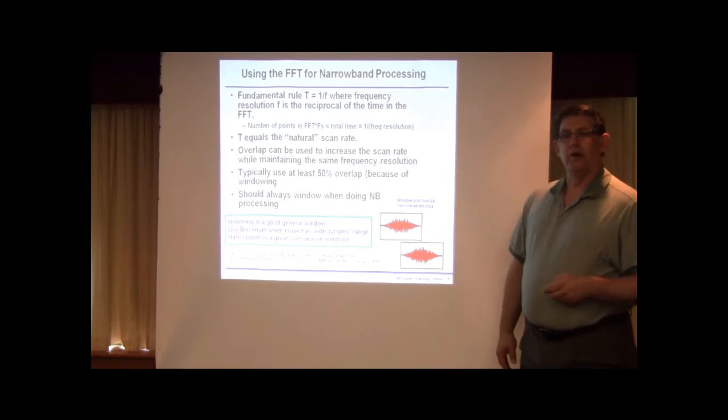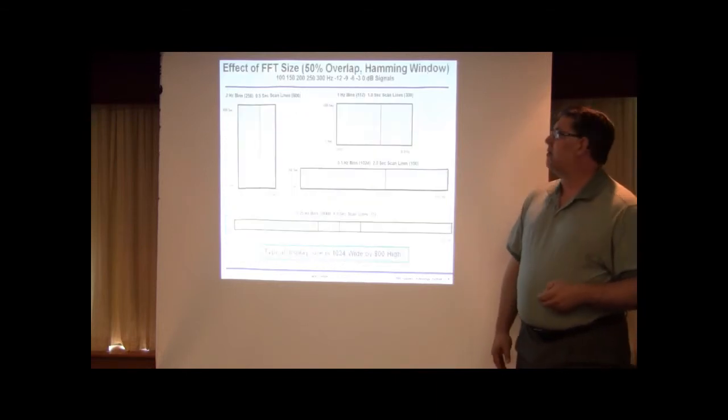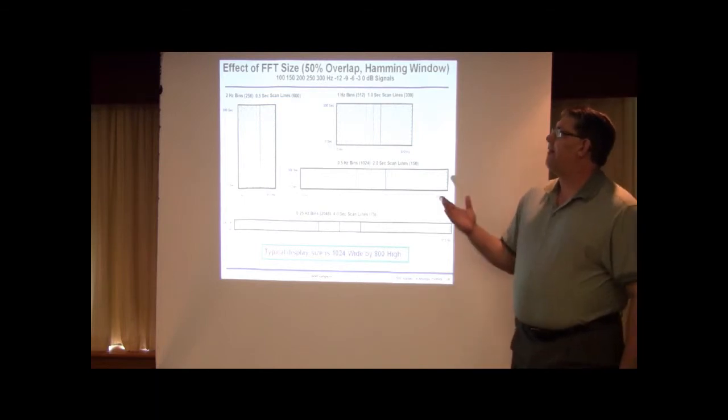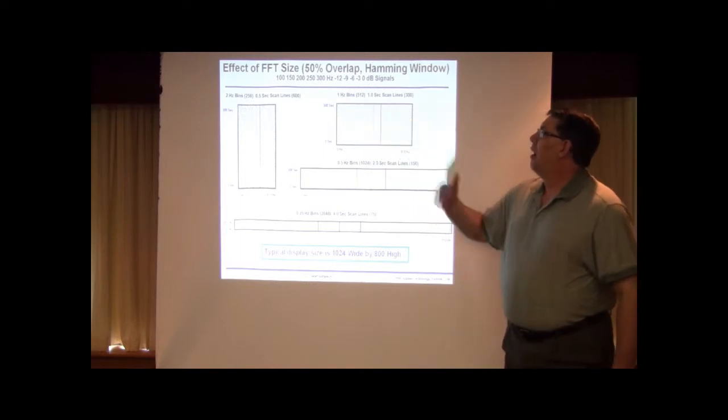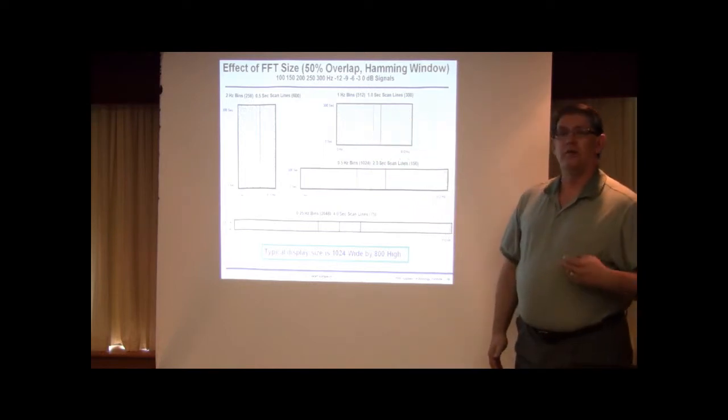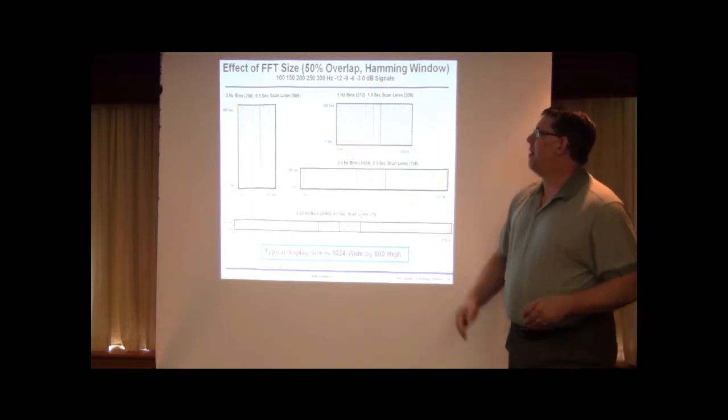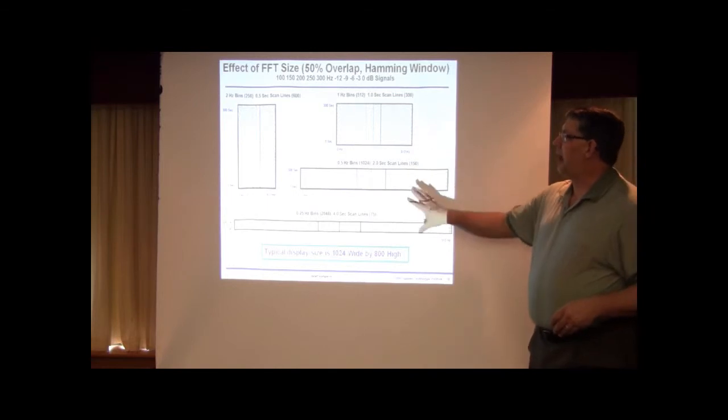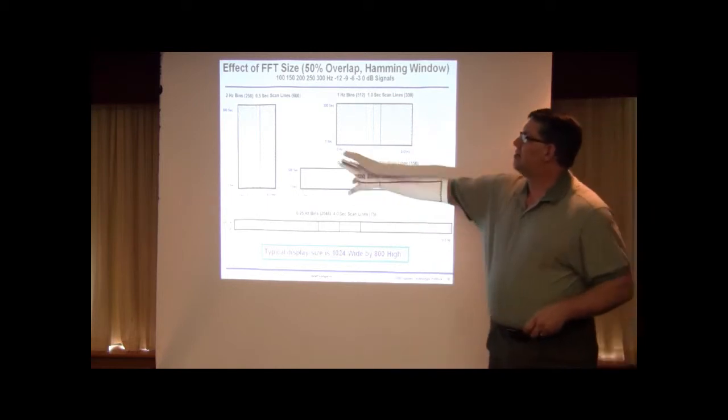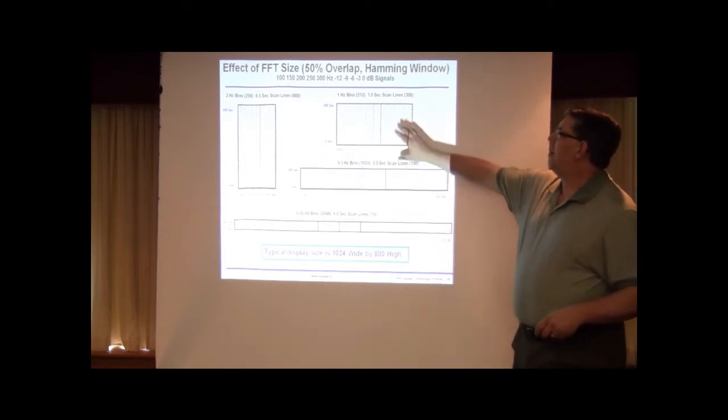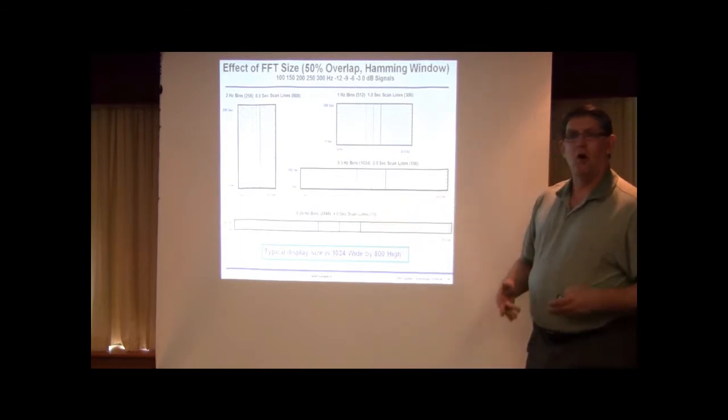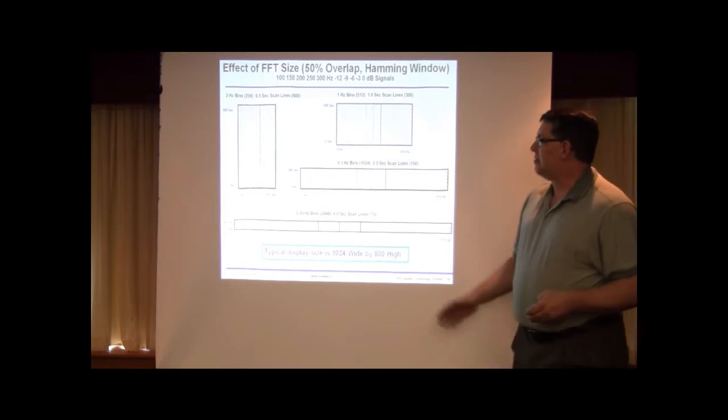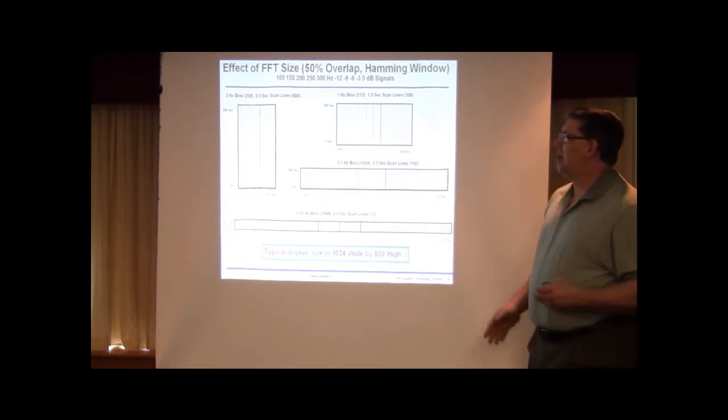The size of the FFT and the overlap can have a big impact on how it looks on a display. For example, here I have five signals, 100, 150, 200, 250, and 300 hertz at different levels. Some of them are very low and some are very high. And you can see that this is all the same data but has been FFTed in a different way. That is, these are two hertz bins over here with half-second scan lines, one hertz bin with one-second scan lines, half hertz with two seconds, and quarter hertz with four seconds, all using the T equals one over F. And you can see that the picture changes relatively dramatically in terms of the size and shape.